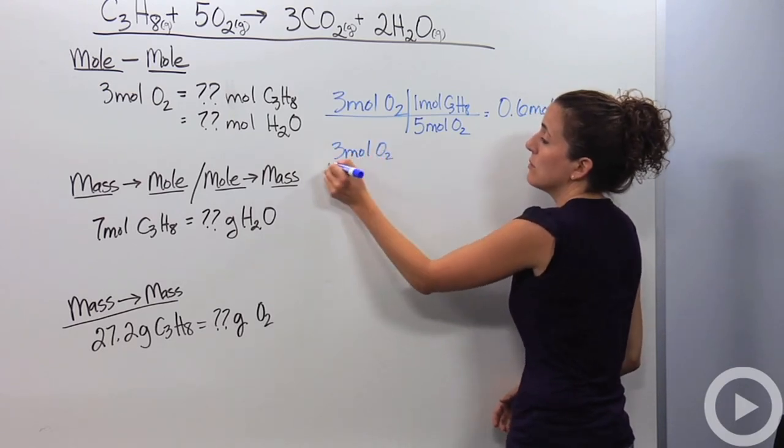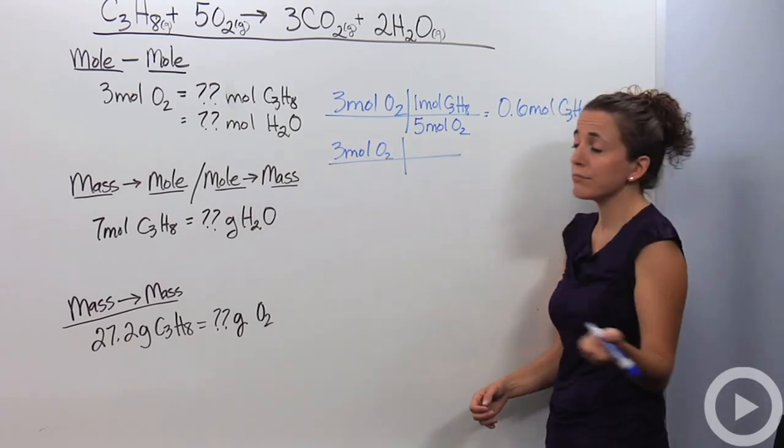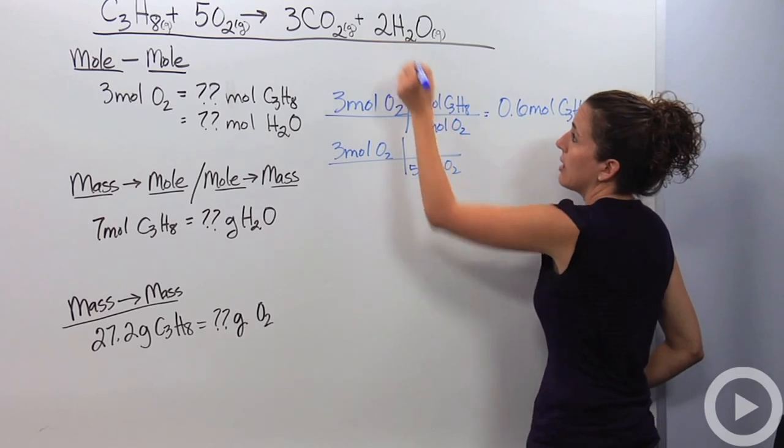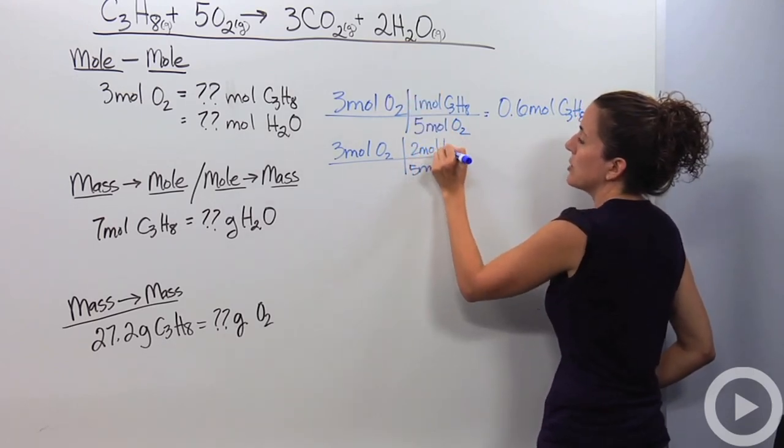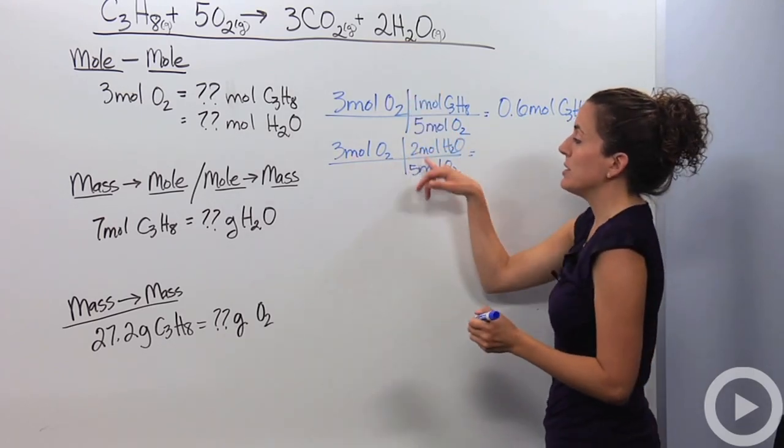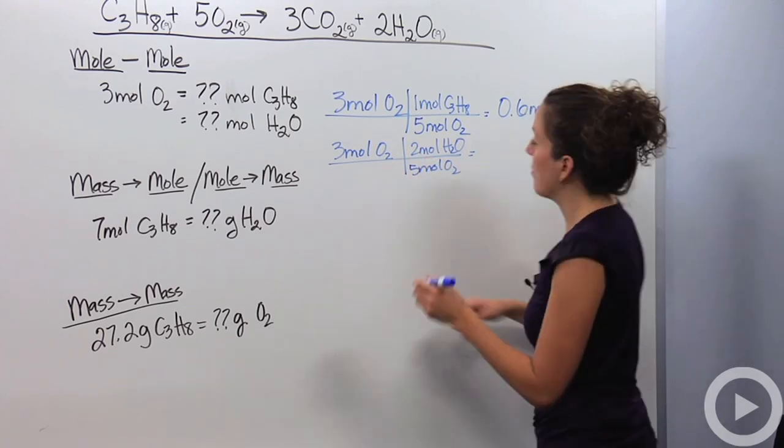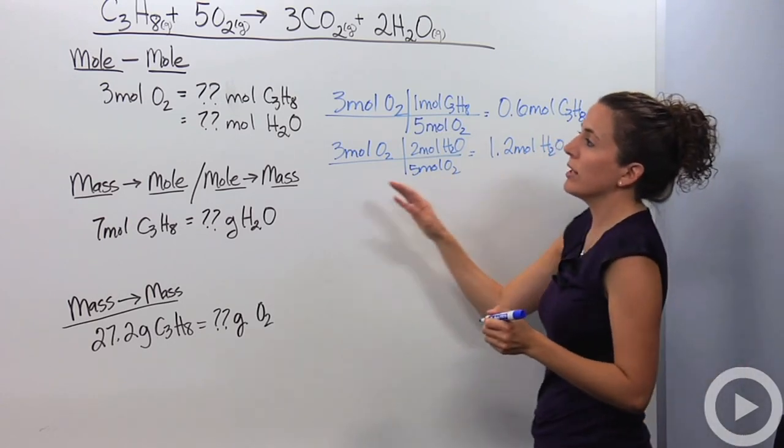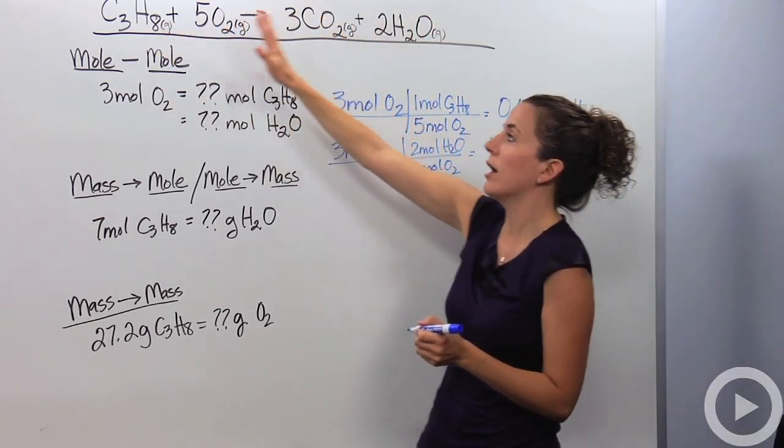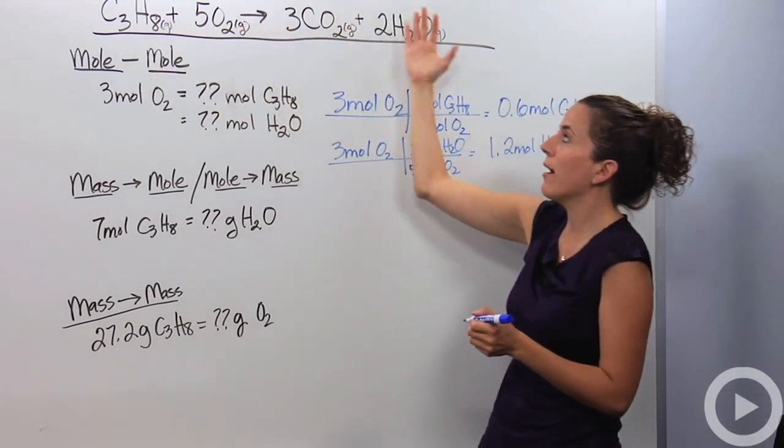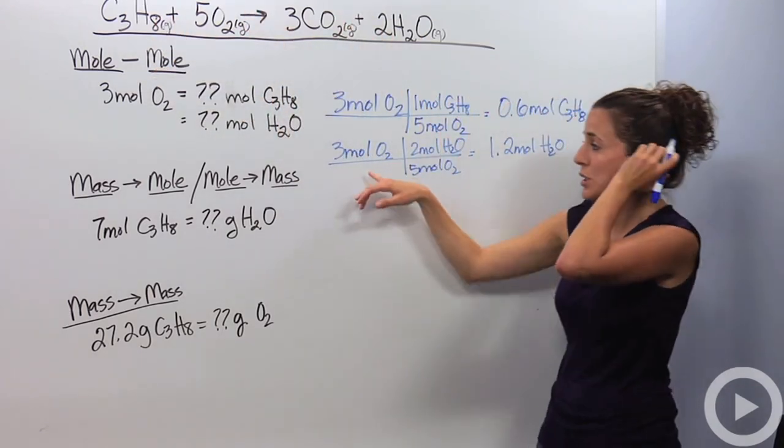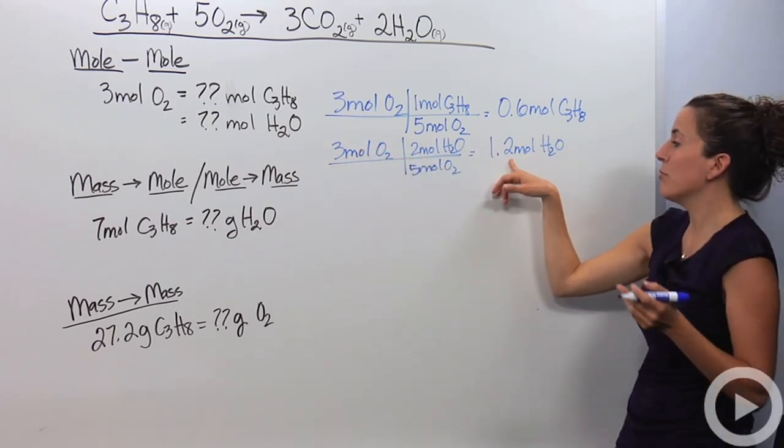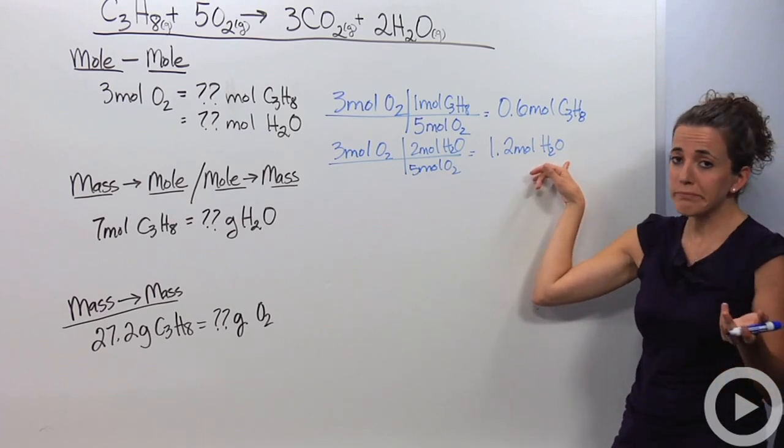I'm going to start with my given of 3 moles of O2. I'm just going to do a mole ratio. From my reaction, I have 5 moles of O2 and I can produce 2 moles of H2O. So 3 times 2 divided by 5 will give me 1.2 moles of H2O. So I can use that molar relationship to figure out everything on my chemical reaction to compare all different molecules and elements that you have.